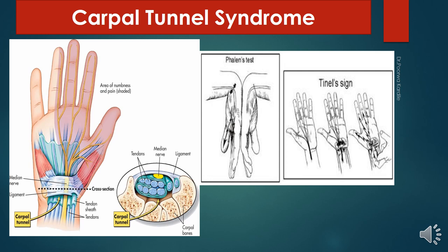The presenting symptoms are painful paresthesia and numbness affecting the palmar side of the radial three and a half digits. The skin over the thenar eminence is not affected, as it is supplied by the palmar cutaneous branch of the median nerve, which arises proximal to the carpal tunnel. Nerve conduction studies are done to confirm the diagnosis.